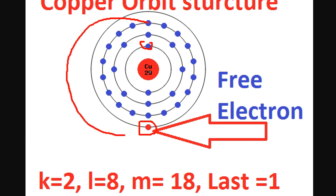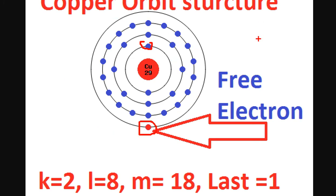I will jump the electrons — this way I will jump at the same level. This is a copper atom. I will jump like this.